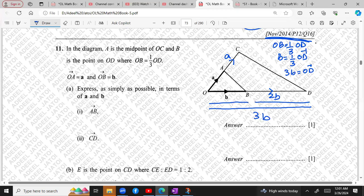So you need to find AB first. Now AB is easy because this will give you AO plus OB. So this is minus A plus B. We can write this thing as B minus A. So first answer becomes B minus A.